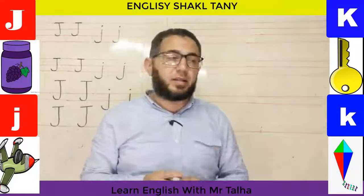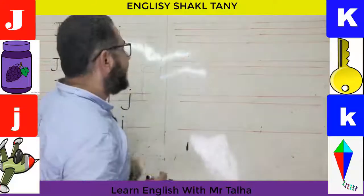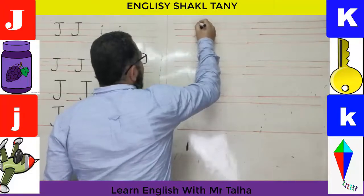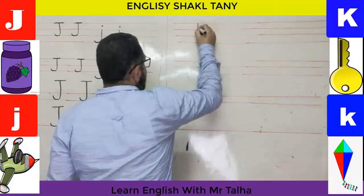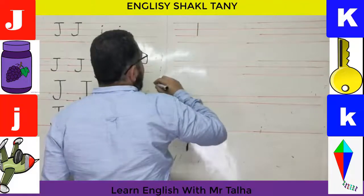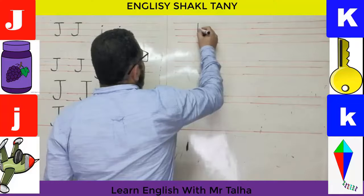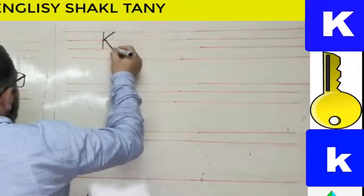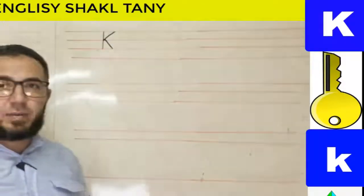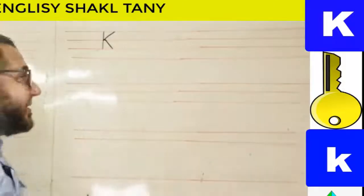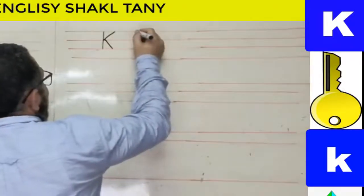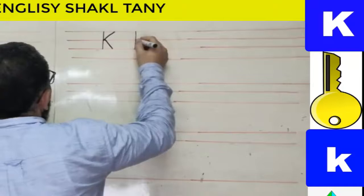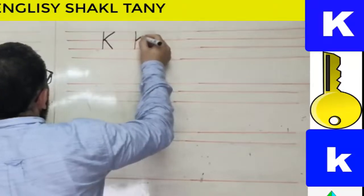Let's see how I write uppercase K on four lines. I tell my child to start at the first line and go down with a straight line to the third line, then from the second line make a diagonal line to the top and another diagonal line to the bottom. That's K capital.